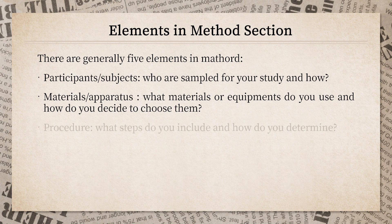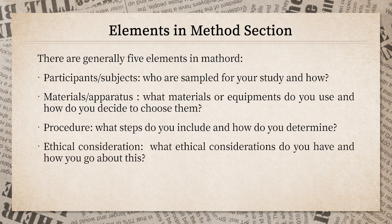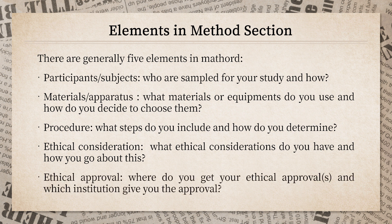Third, what steps you followed and how you determined the procedure. Fourth, ethical consideration — what ethical considerations you have and how you addressed them. Fifth, ethical approval — where did you get your study approved and which institution gave you the approval. You need all five elements of information in your method section.